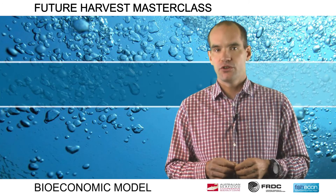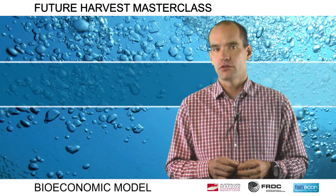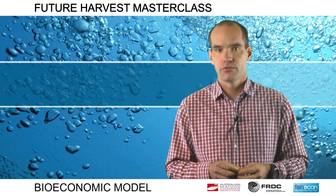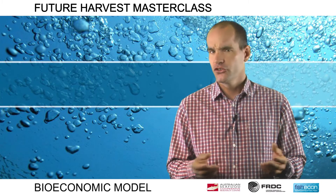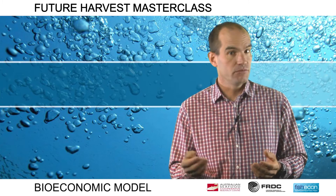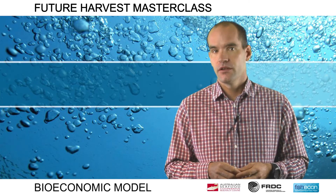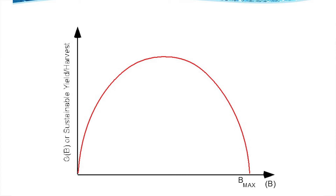Having answered the checkpoint questions, you will understand why we refer to the Schaeffer Model as a surplus production model. Growth in the fish stock is surplus to that required to keep the population at the same level. The surplus could be removed by fishing, and the population would remain unchanged. The figure showing the growth of biomass as a function of stock can also be treated as a sustainable yield curve, providing an estimate of long-run sustainable yield at various biomass levels. However, if we harvest less than a sustainable yield at a given stock level, the population will grow. If we harvest more, that is overfishing, the stock will decline.